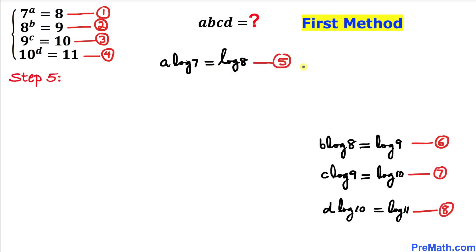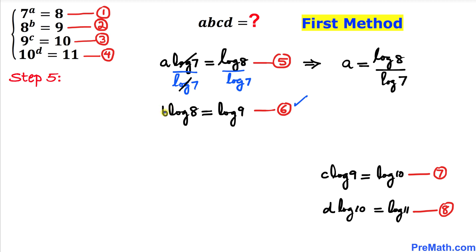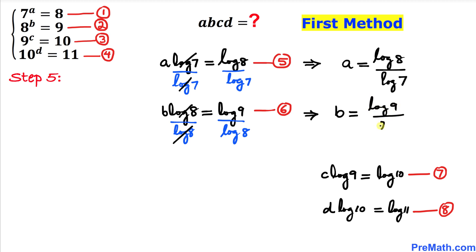Now let's focus on equation five and isolate a. Dividing both sides by log of seven, these cancel each other out, so we get: a equals log of eight divided by log of seven. Now focusing on equation six to isolate b, dividing both sides by log of eight, they cancel out, giving us: b equals log of nine divided by log of eight.